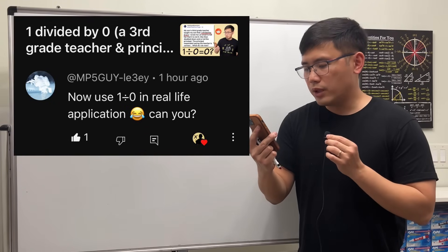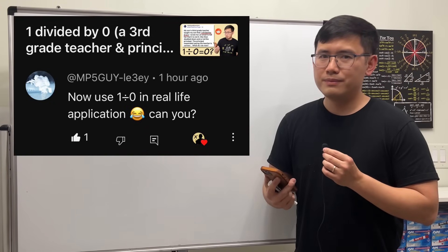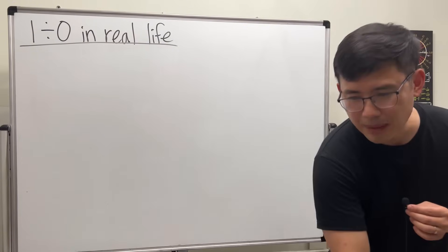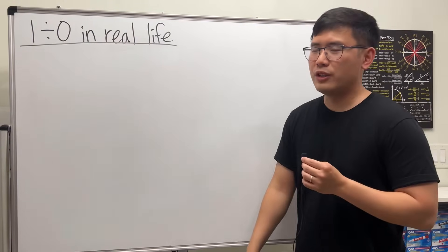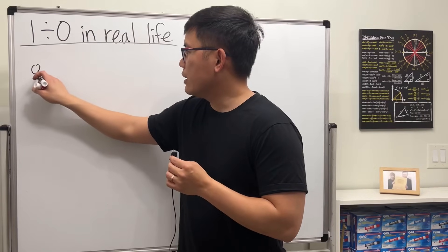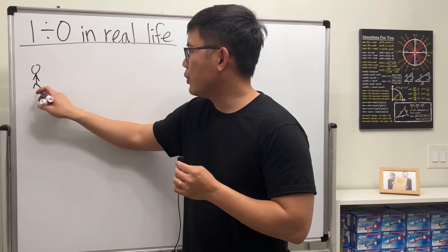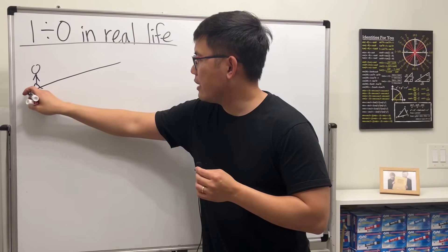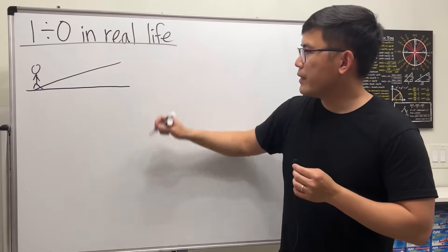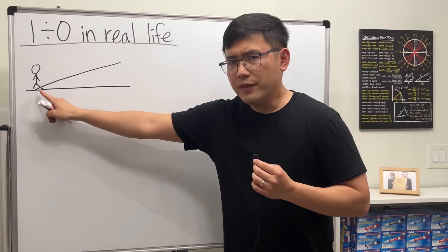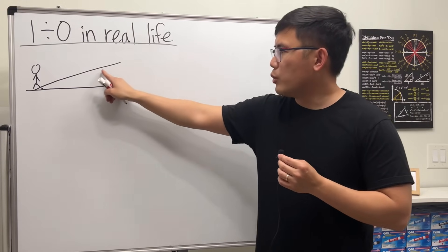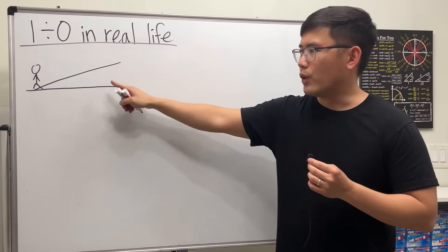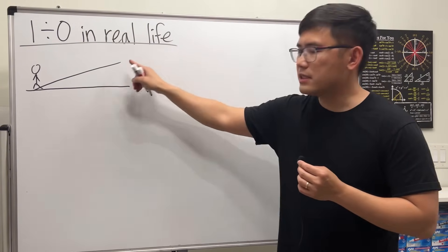Now, can we use one divided by zero in a real life application? Yes, let's have a look. But before that, we need to do some preparation. Imagine you are right here and you want to go uphill. Let's say we have a horizontal road right here. One of the questions we need to know is: what's the slope of this hill, or in math, what's the slope of this line?